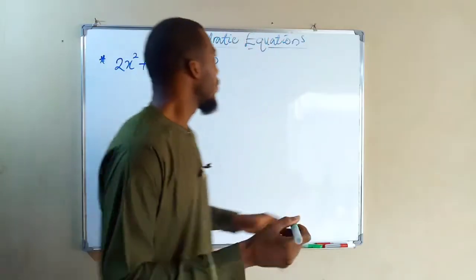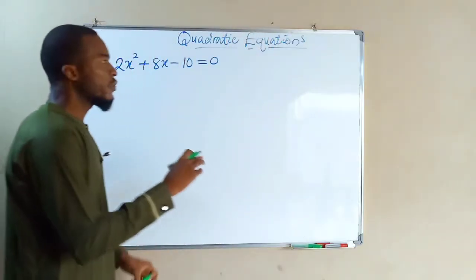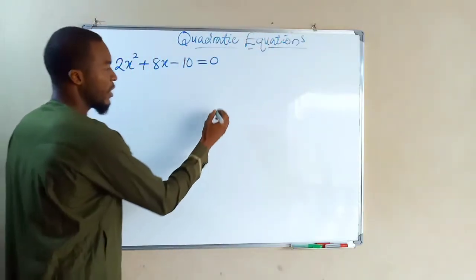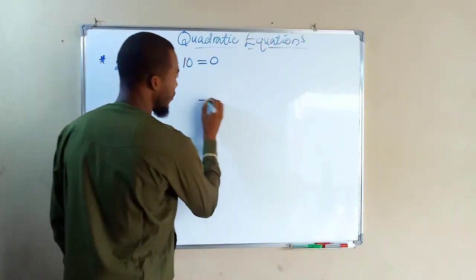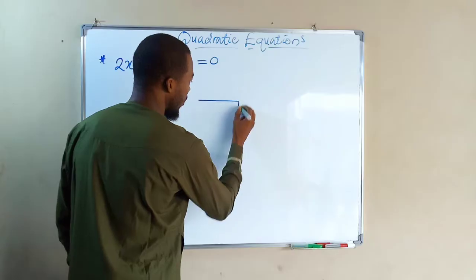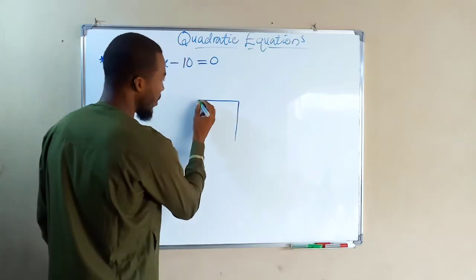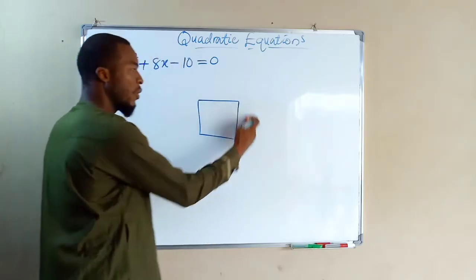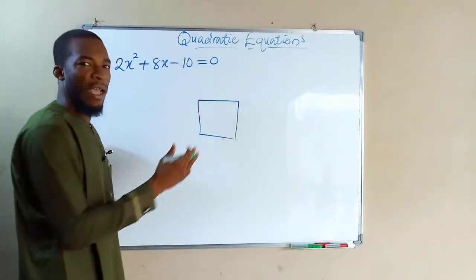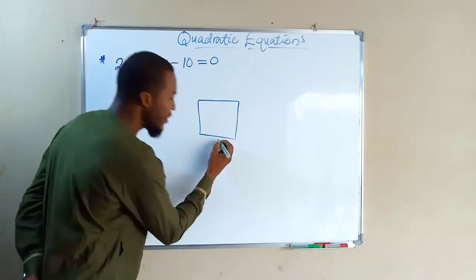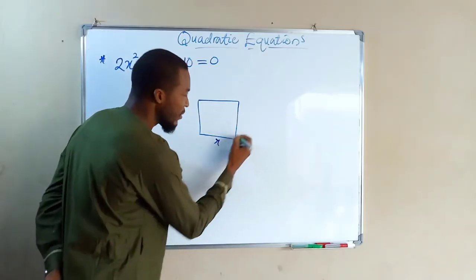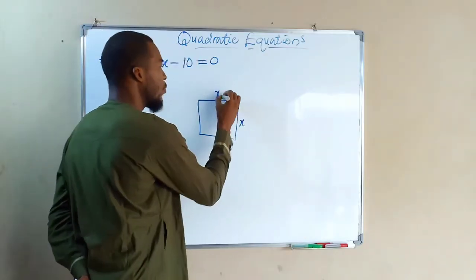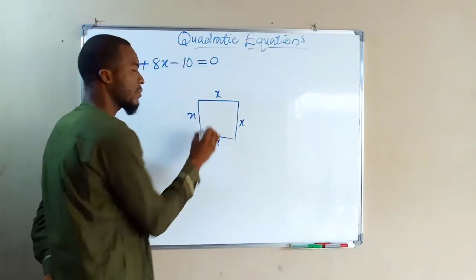Before we go on, I want us to understand what it means by a square. A square is a plane figure that has equal dimensions — all sides are equal in a square. So if this side is x, all other sides will also be x.